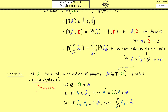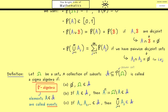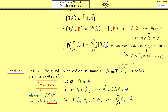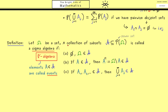The third property: we take countably many sets from A and then the whole union should also be an element of A. With these 3 properties, the collection A is called a sigma algebra, and we usually write it with a lower case sigma. Important to note: the elements of a sigma algebra in probability theory are usually called events.